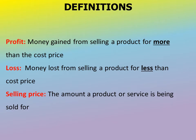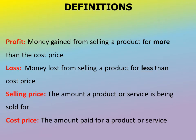The final term we're looking at today is cost price. The cost price is the original amount that you paid for a product or service. The selling price is the amount that you are selling that product or service for.